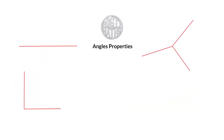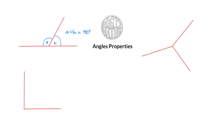The very first thing we're going to talk about is angles on a straight line. Here I have got a straight line, and all the angles on a straight line add up to 180 degrees. So if I put angle A there and angle B here, together A plus B would add up to 180 degrees. This is a fact — you just have to learn it and know it.